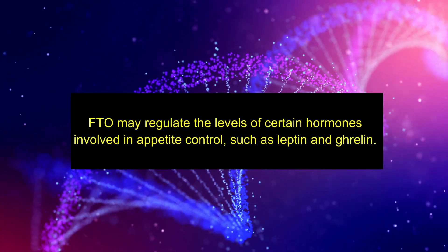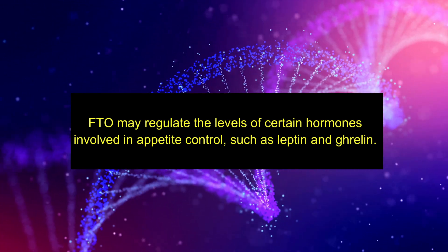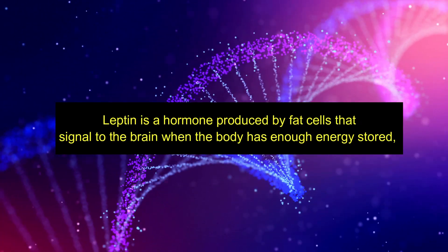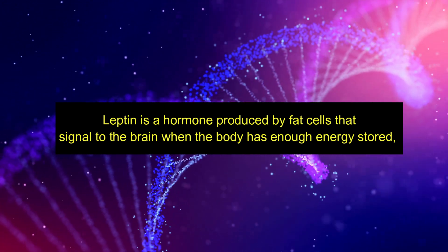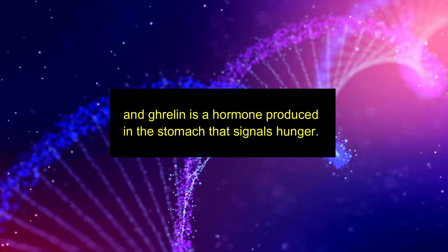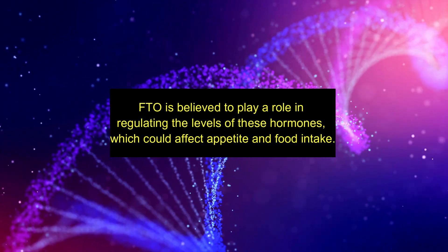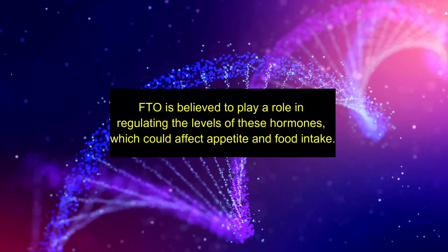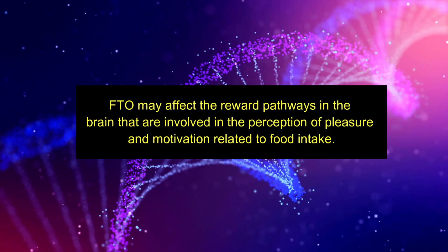FTO may regulate the levels of certain hormones involved in appetite control, such as leptin and ghrelin. Leptin is a hormone produced by fat cells that signals to the brain when the body has had enough energy stored, and ghrelin is a hormone produced in the stomach that signals hunger. FTO is believed to play a role in regulating the levels of these hormones, which could affect appetite and food intake. FTO may also affect the reward pathways in the brain involved in the perception of pleasure and motivation related to food intake.